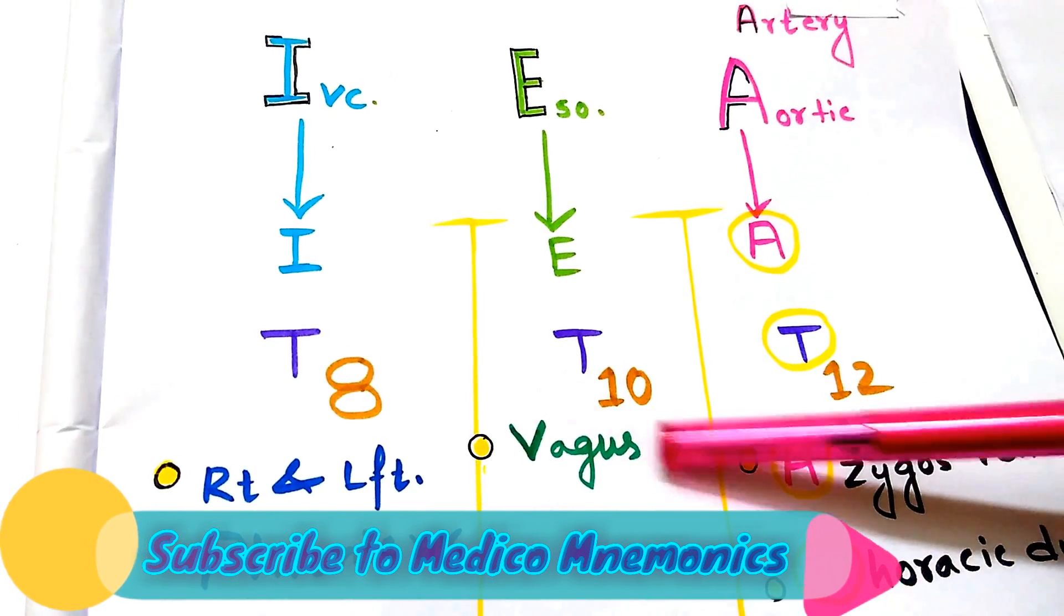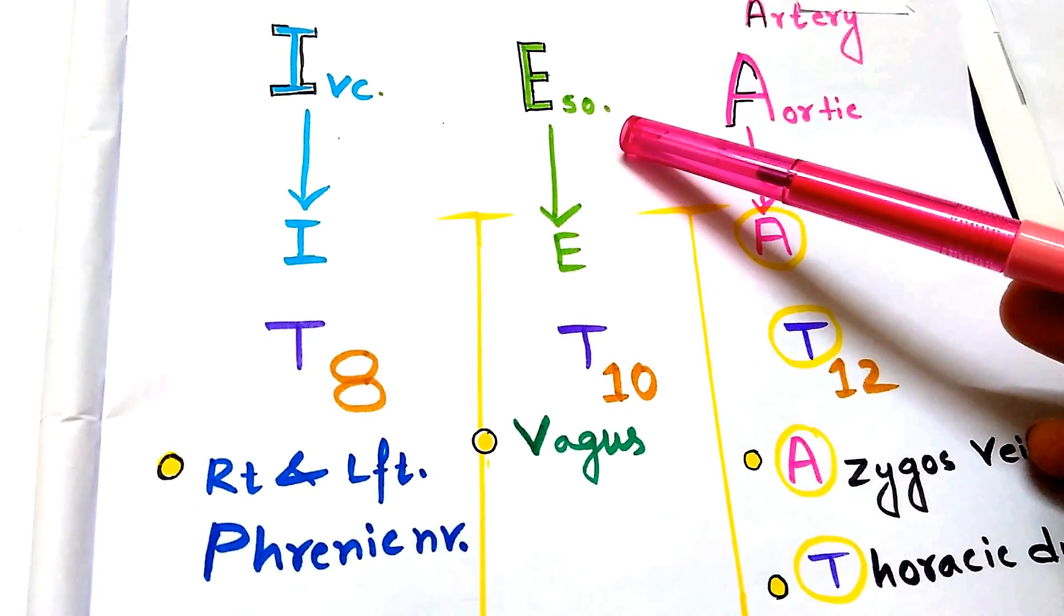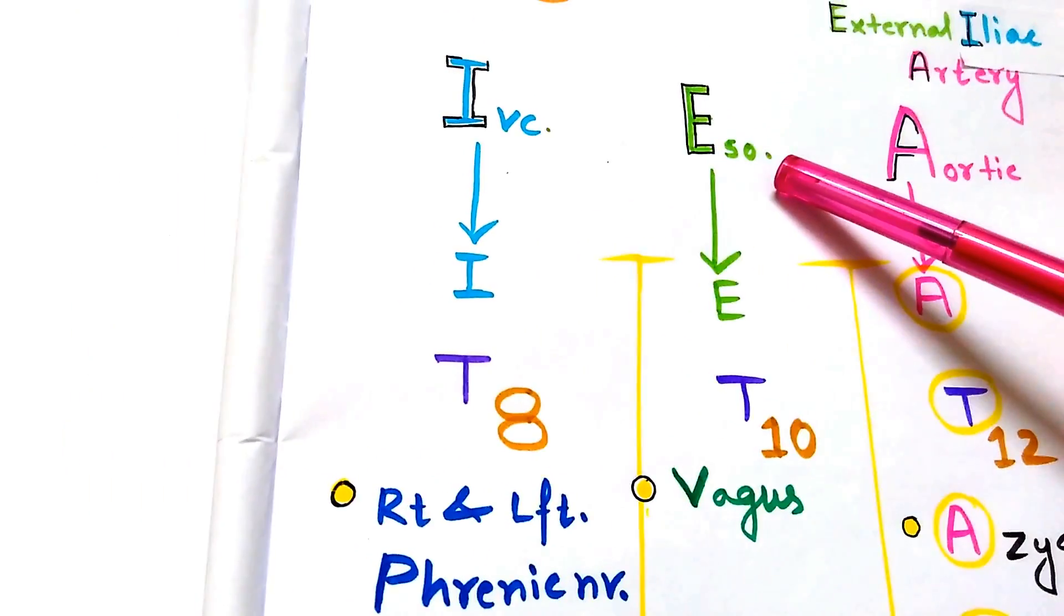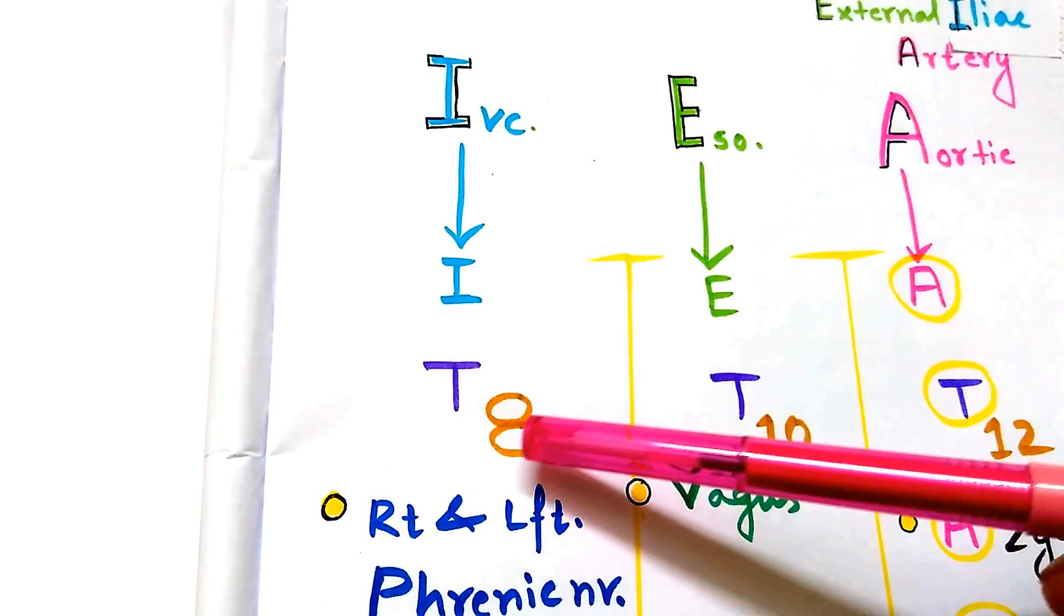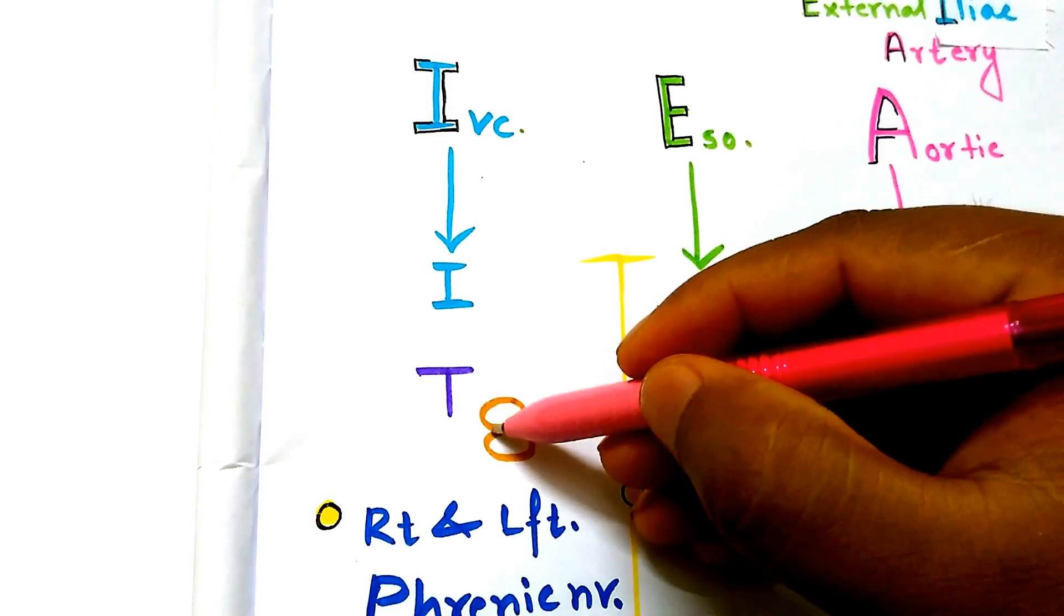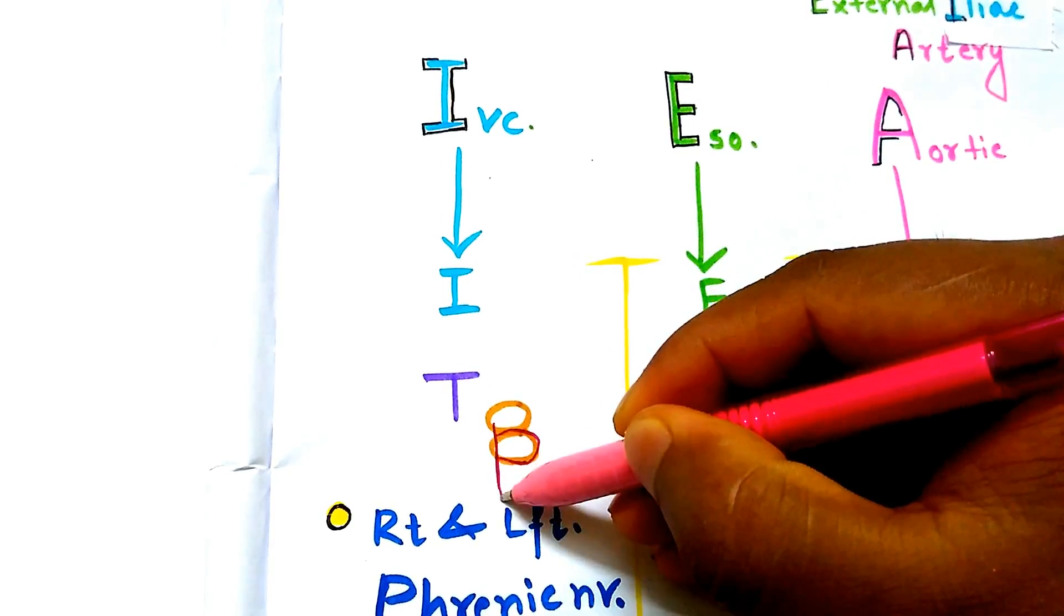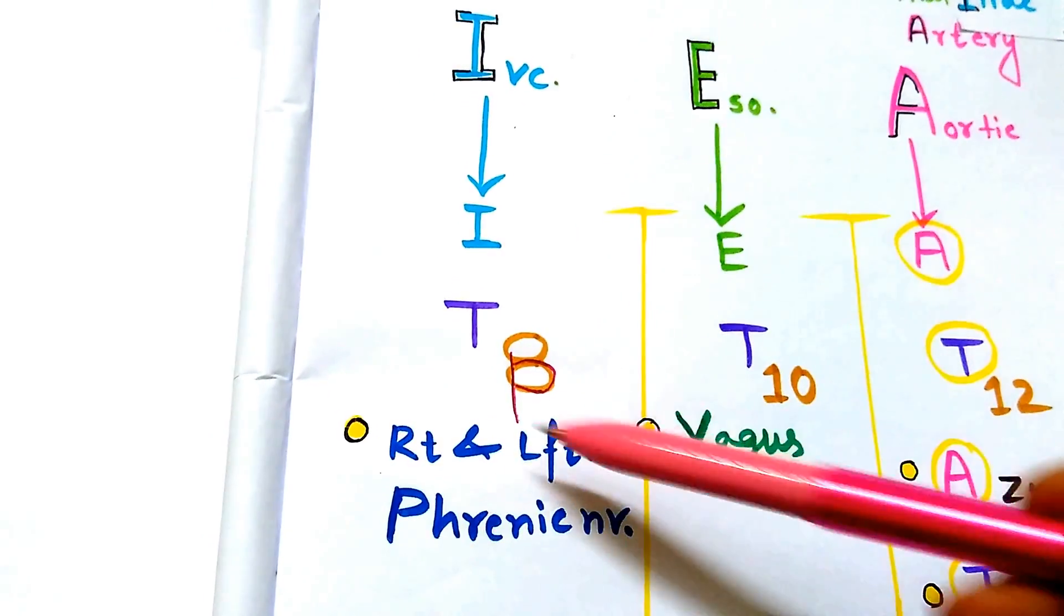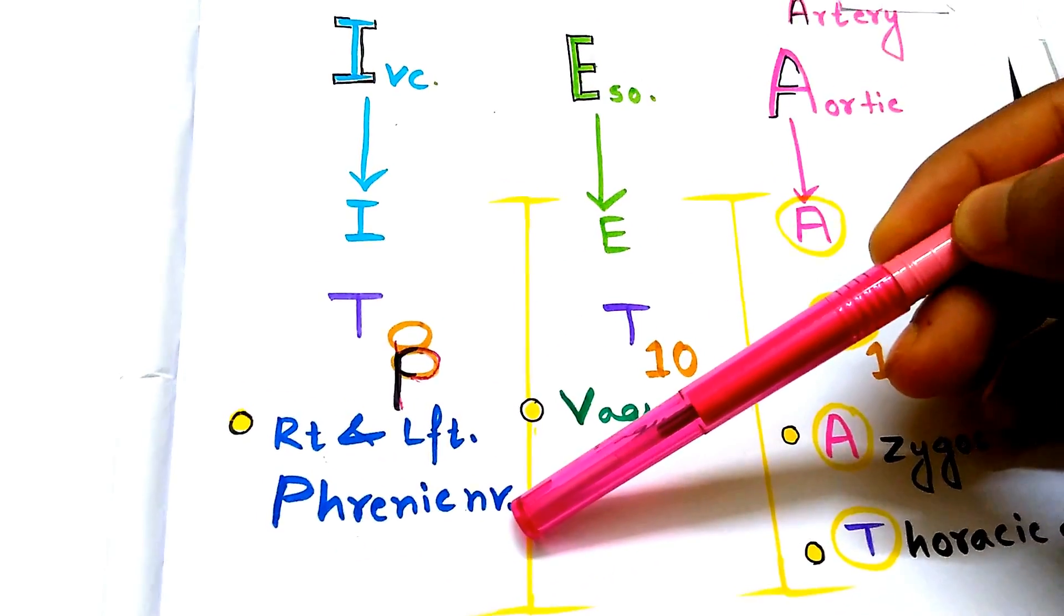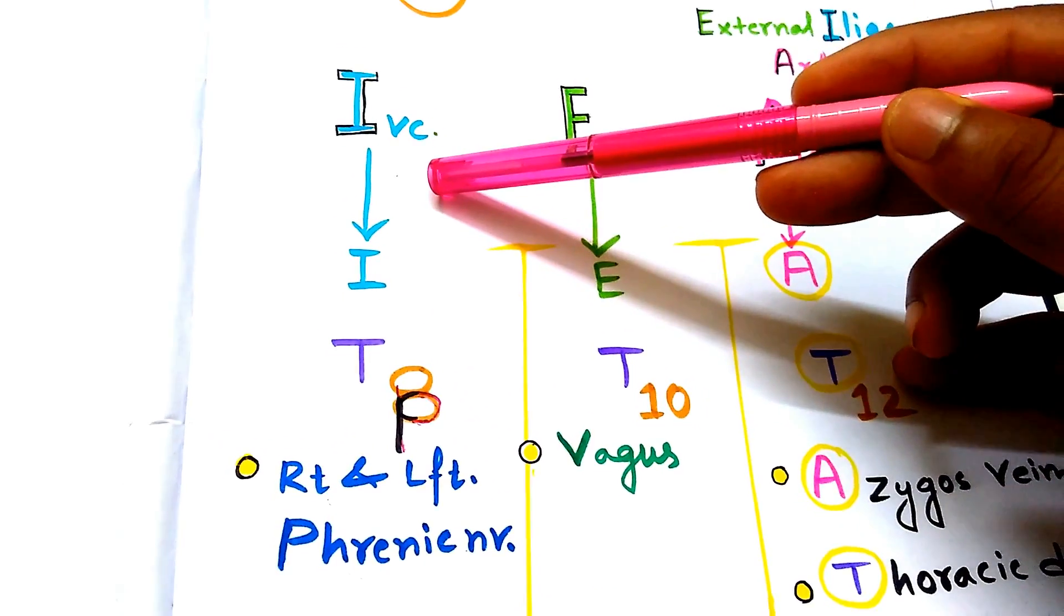Now the IVC opening which is at the level of T8 - just give a scratch by the lower segment of A so that it looks like P. The P for Phrenic nerve, that is right and left phrenic nerves pass through the vena caval opening.